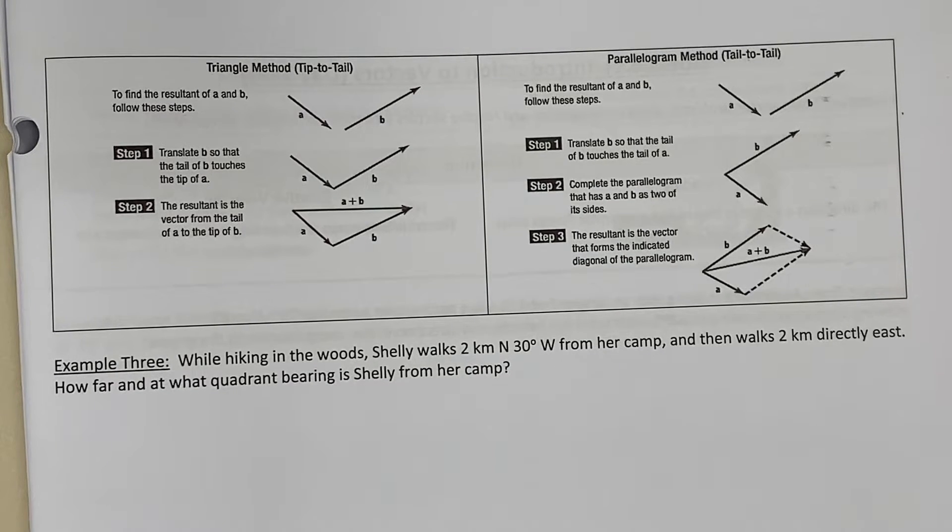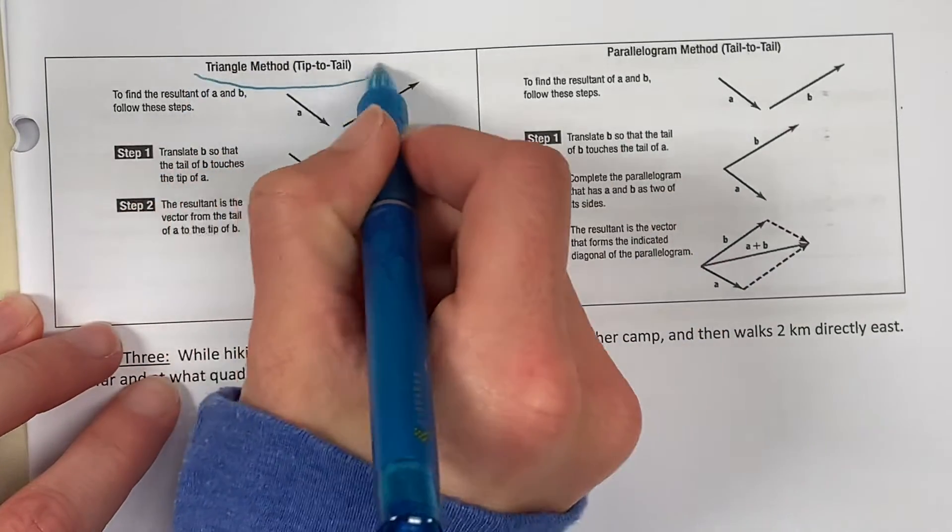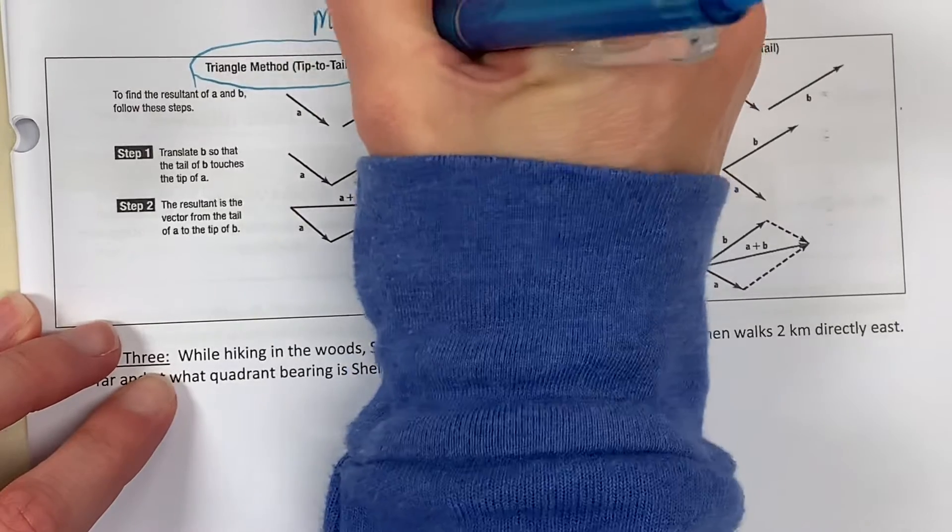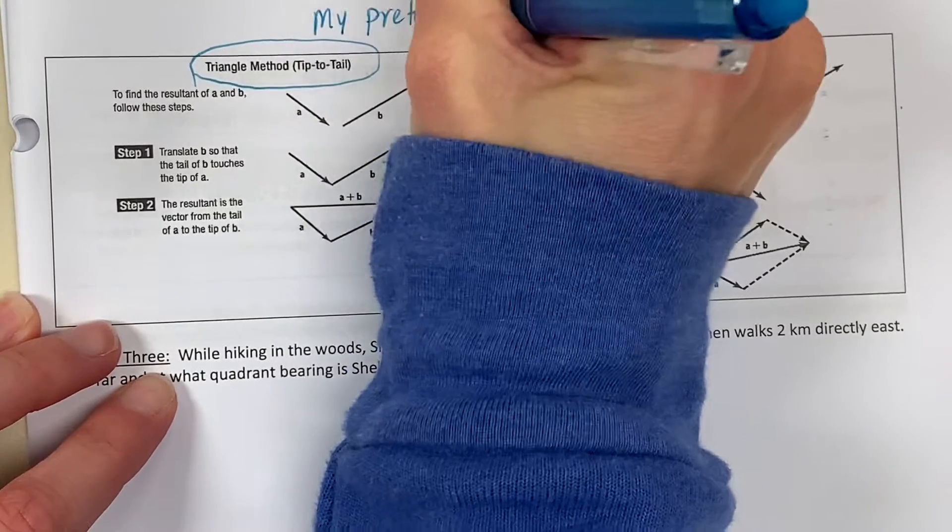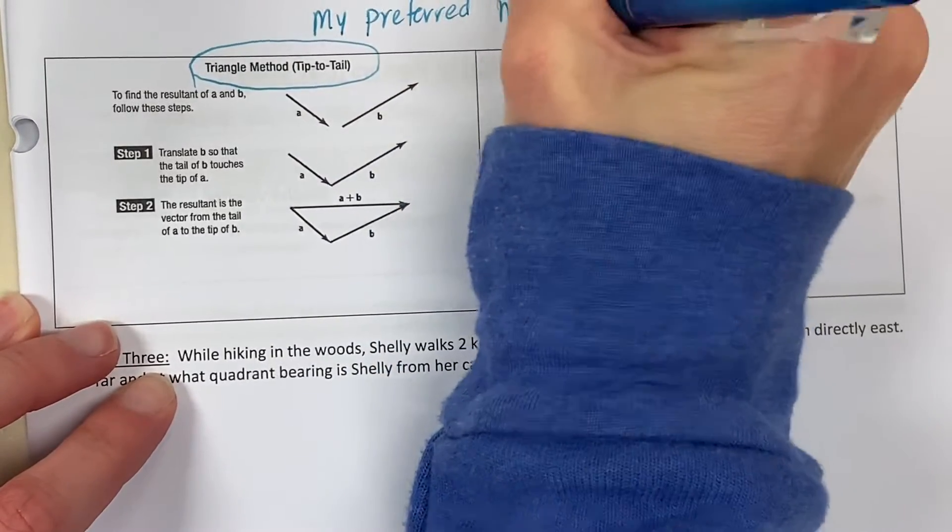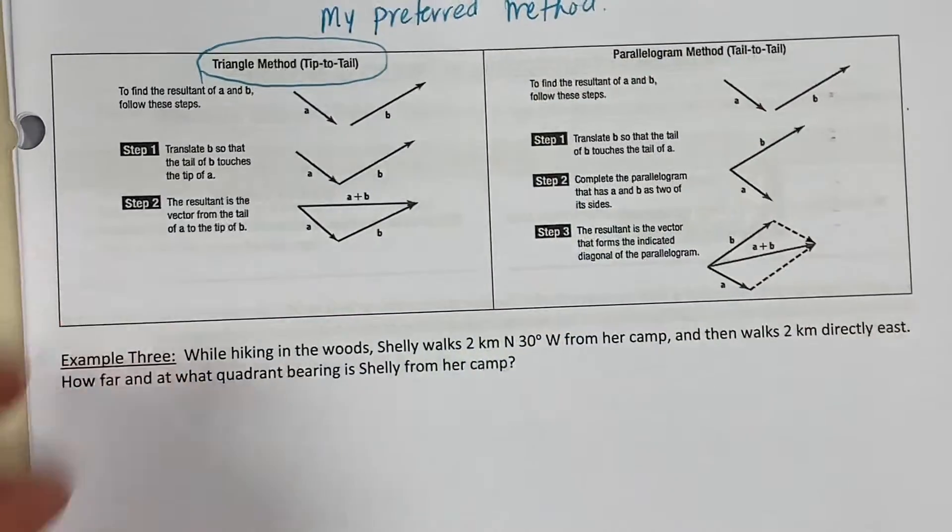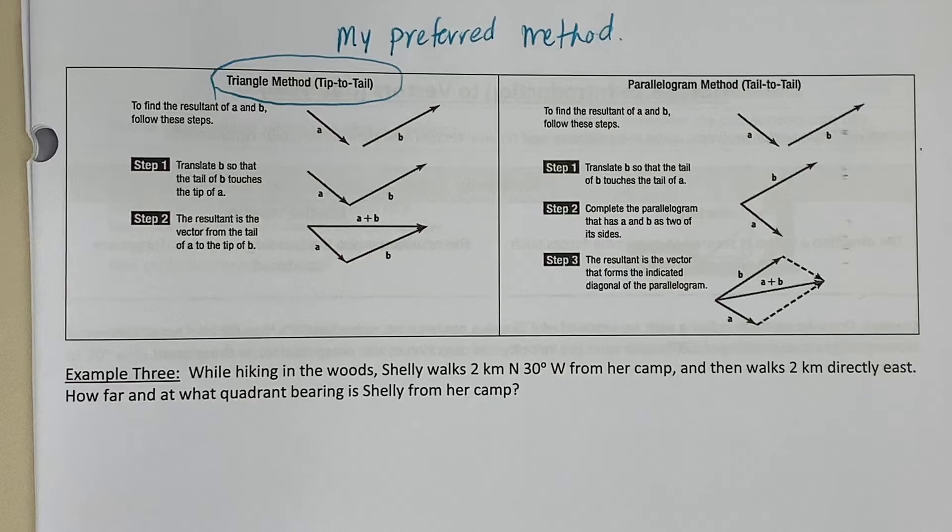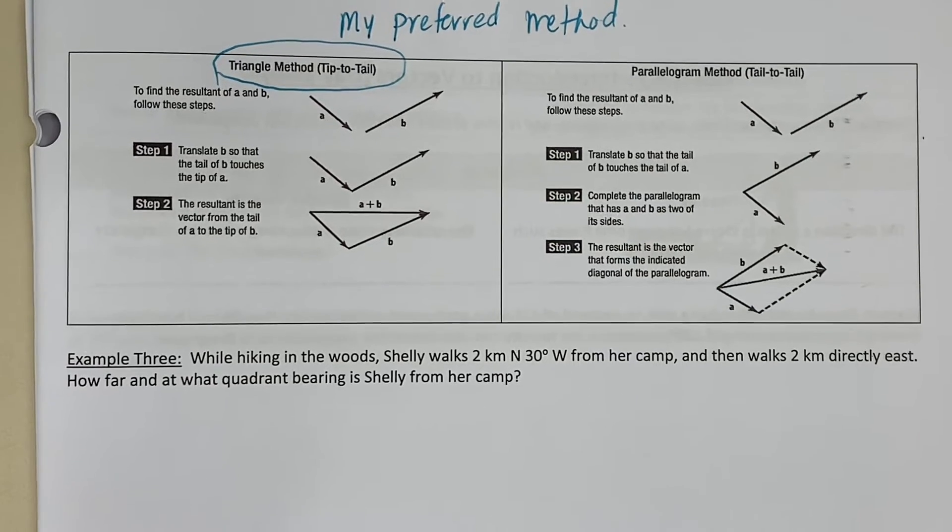I'm going to be honest, my preferred method and what I use almost every time is the triangle method. I went into a little bit of detail with that at the previous exam. So where does all of this use? Let's look at Example 3.